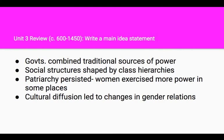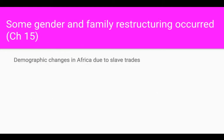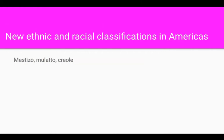Now write a main idea statement for Unit 3. In Period 4, there is some restructuring that happens with the slave trade, which made demographic changes, particularly in Africa, as predominantly men were removed from African society. As far as gender roles, women had more responsibility in the societies the men were taken from. From a social hierarchy standpoint, in the Spanish and Portuguese American colonies, there were racial classifications that also carried social hierarchy stratifications — Creoles, for instance, were higher status than Mestizo or Mulatto.